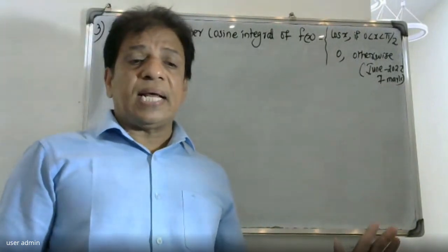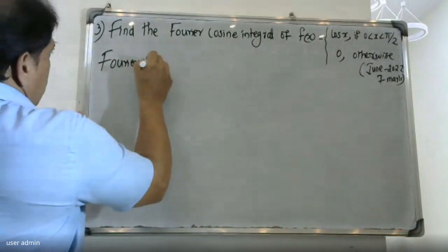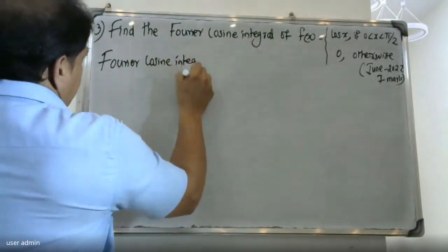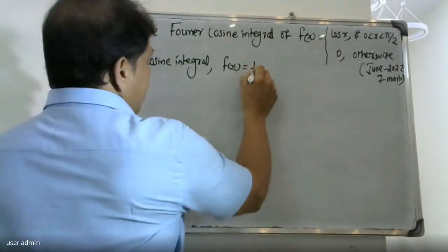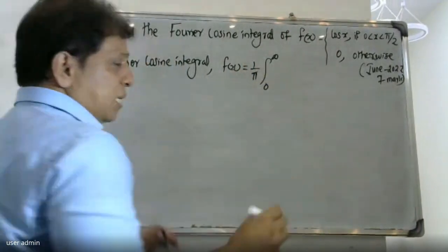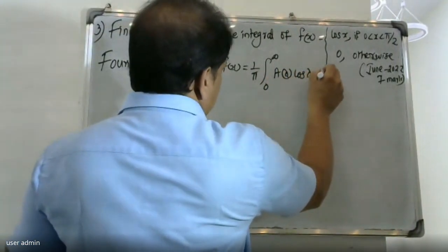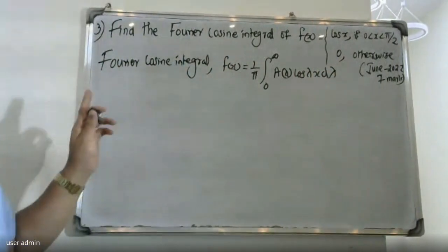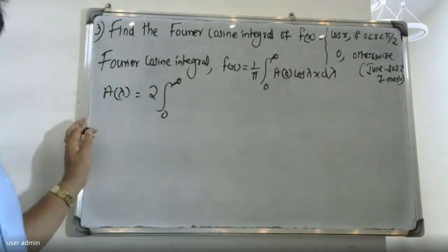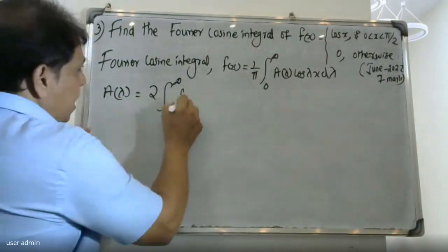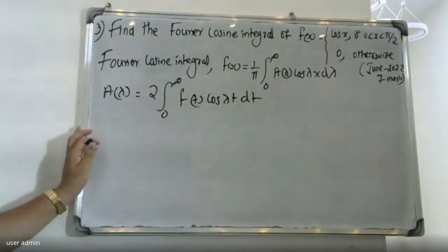We can declare that the Fourier cosine integral in general is: f(x) = (1/π) ∫₀^∞ A(λ) cos(λx) dλ, where A(λ) = 2 ∫₀^∞ f(t) cos(λt) dt.